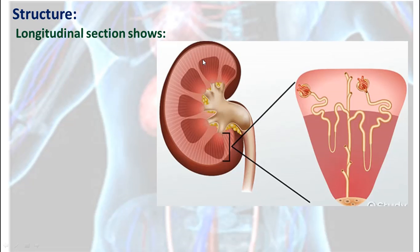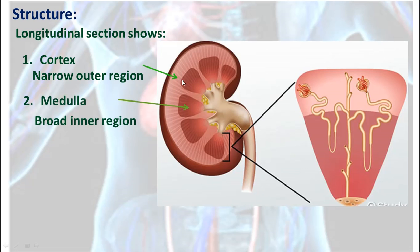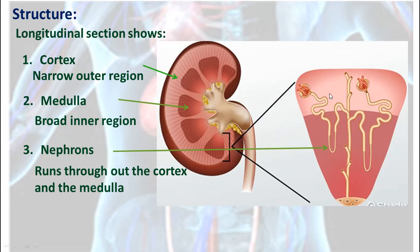If we cut the kidney longitudinally, we will have a longitudinal section showing a narrow outer region called the cortex, and a broad inner region called the medulla. If we take one part and enlarge it, we will see that inside the cortex and the medulla there are structures called nephrons — very fine structures that run throughout the cortex and the medulla and reach the pelvis at the end.